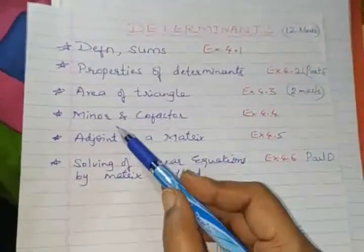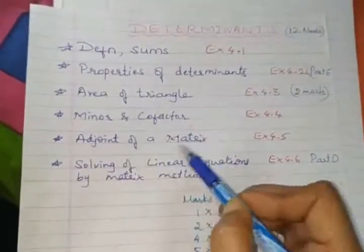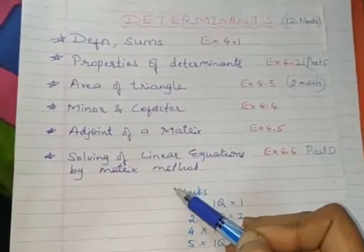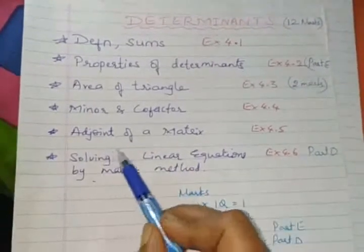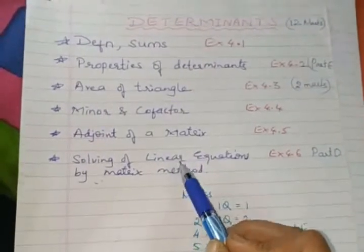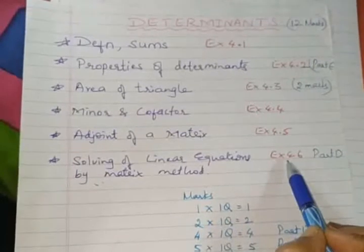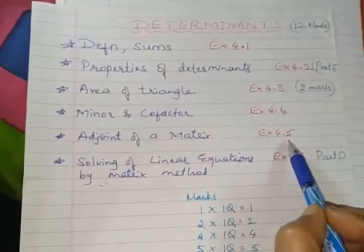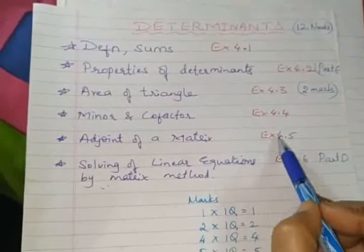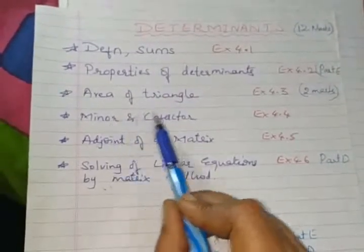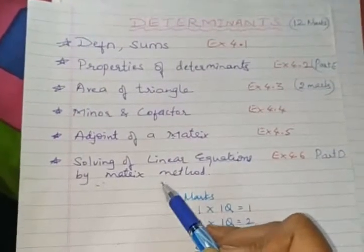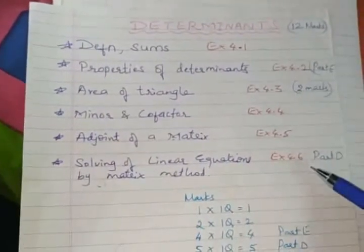In solving this 5 marks question, in solving this linear equation by matrix method, to support this exercise 4.6, you had to be perfect in 4.4 and 4.5. So once you are perfect in these 2 exercises which gives you an idea regarding minor cofactor and adjoint, then I think 5 marks question will be easy for you. This is the pattern what we find it here.